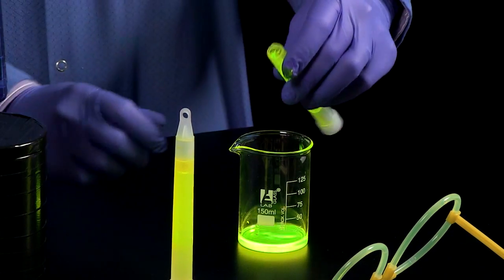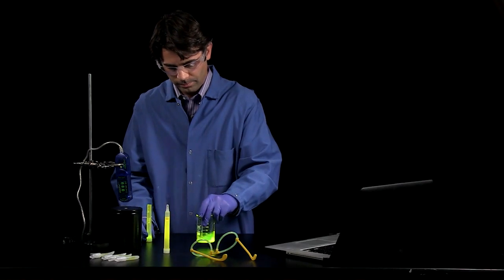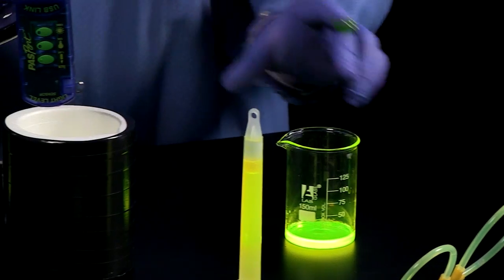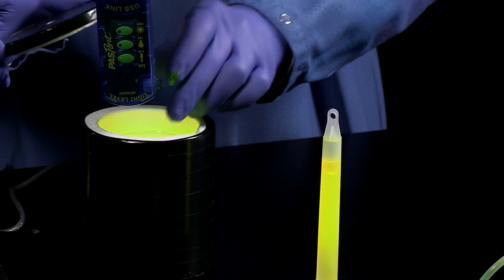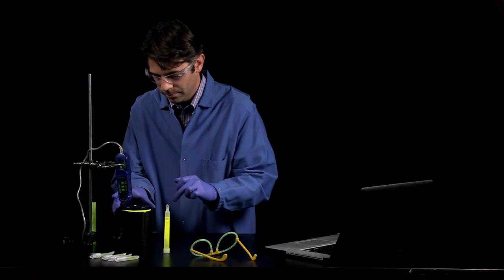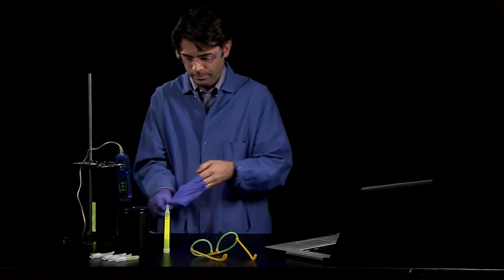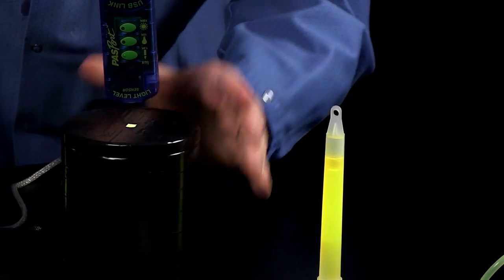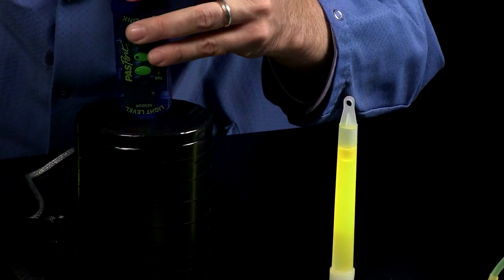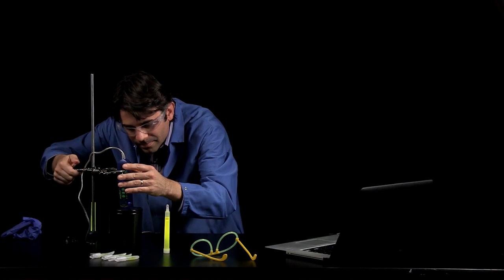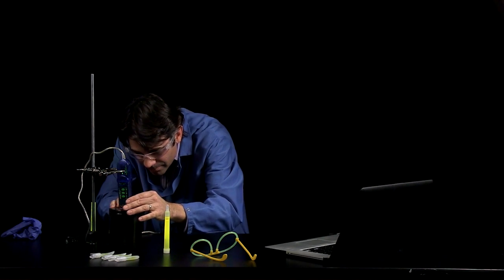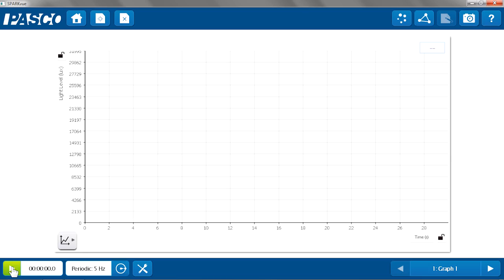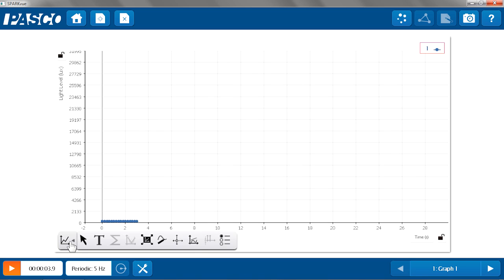Now, I'm going to make sure they're nice and mixed, and I'm going to put them in my vessel. Line up my light sensor and start data collection. I'm going to auto scale the graph.